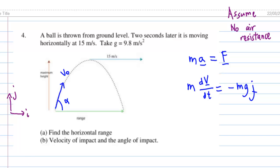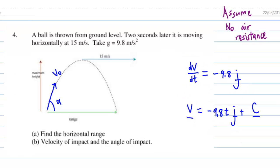Cancel the m. Then we have dV dt equal to negative 9.8 j, taking g equal to 9.8 meters per second squared. So dV dt is negative 9.8 j. Integrate this with respect to t. We get V equal to minus 9.8 t times j plus a constant vector.